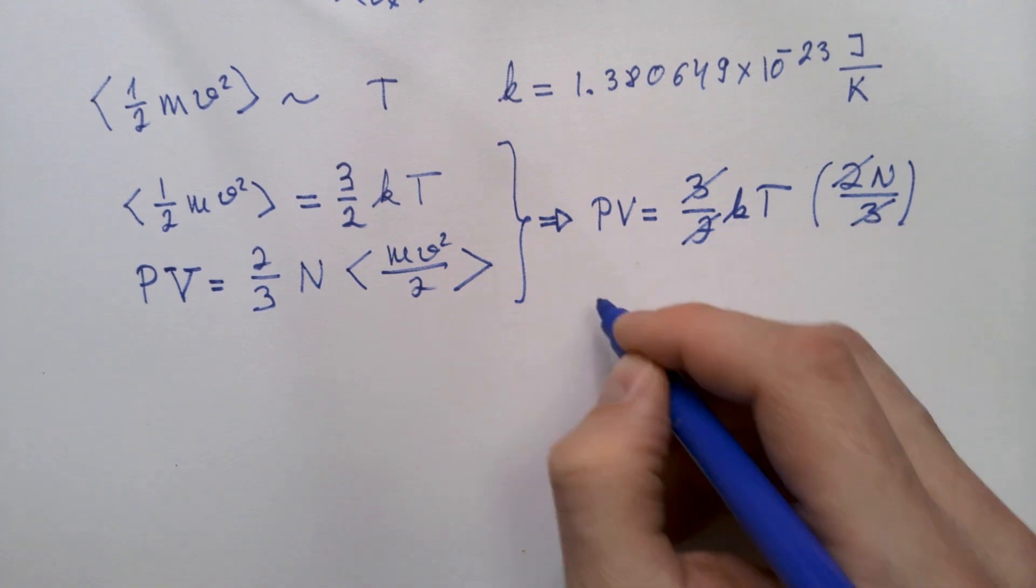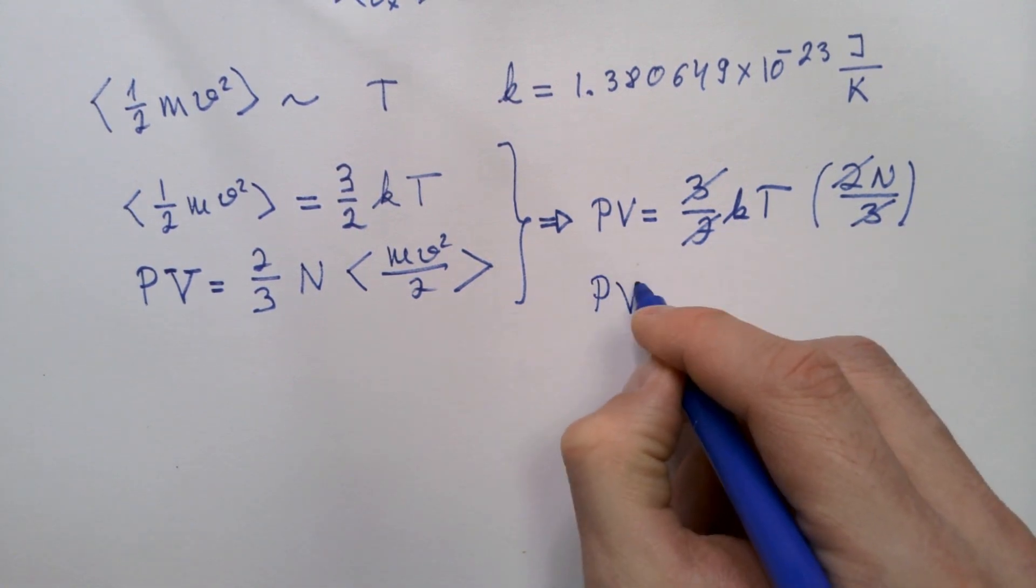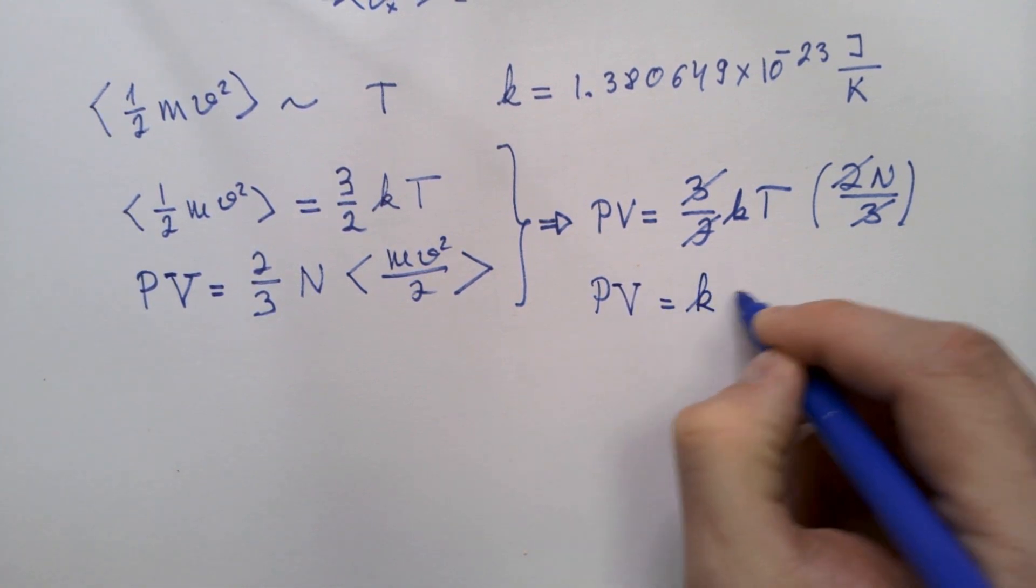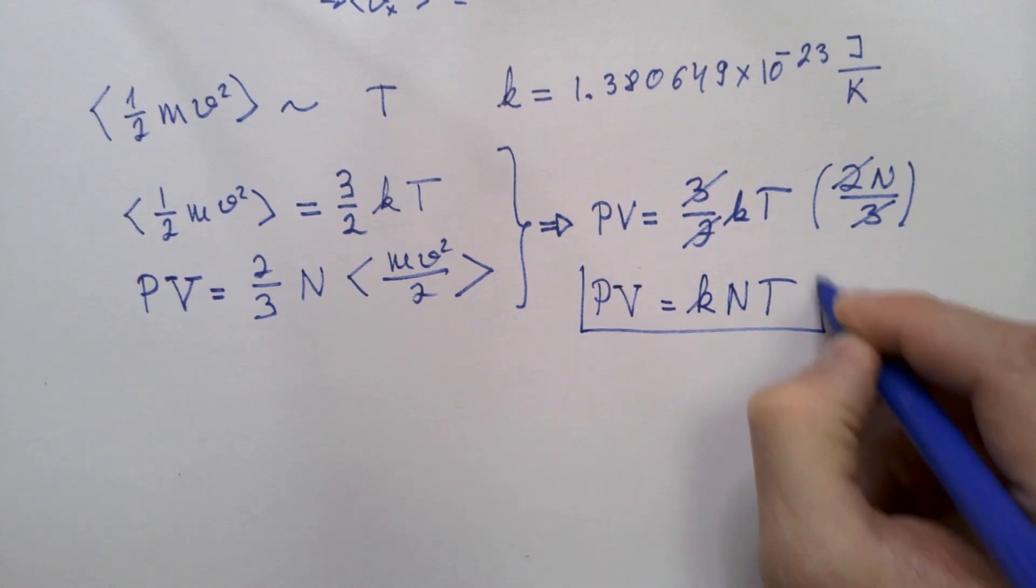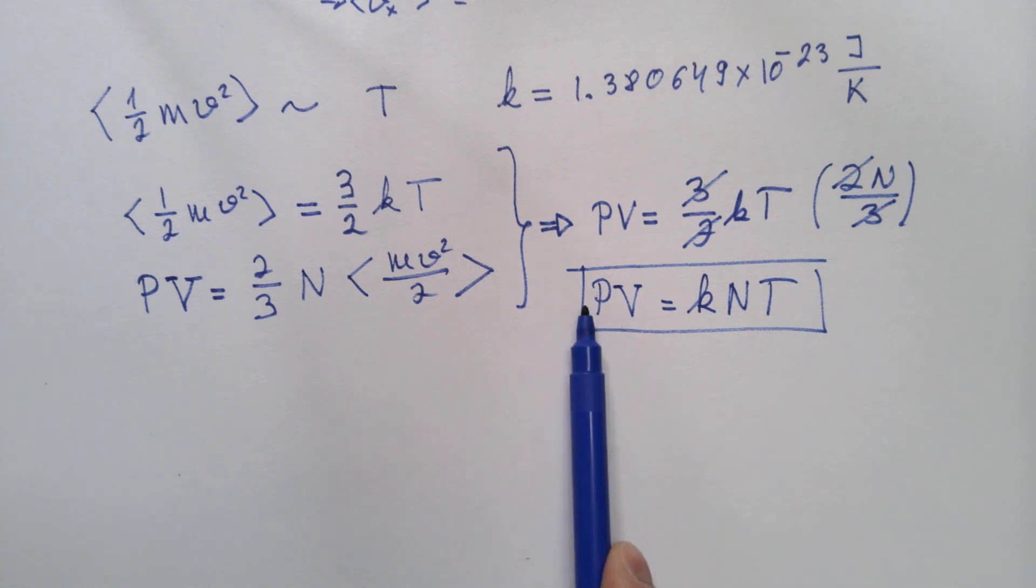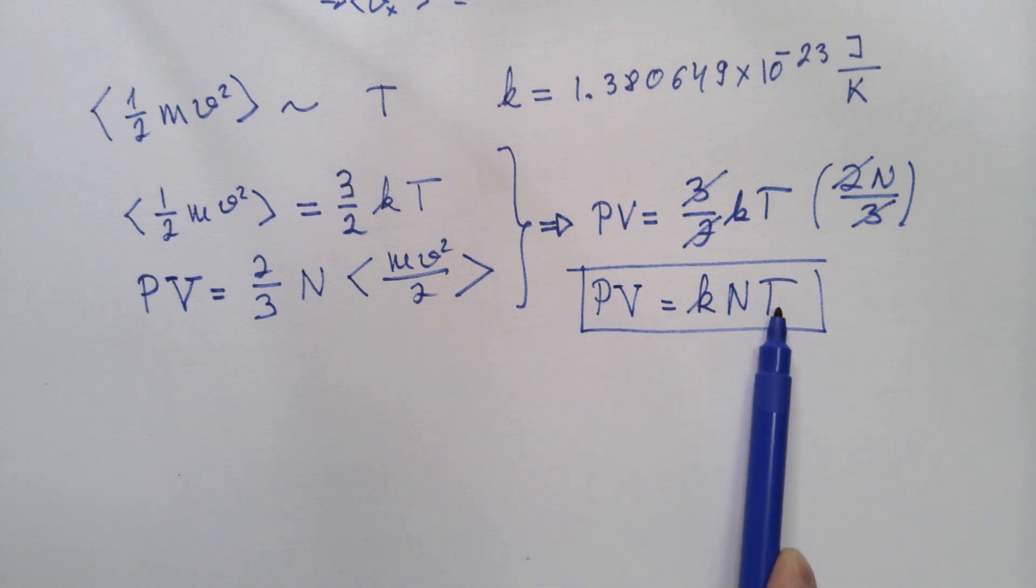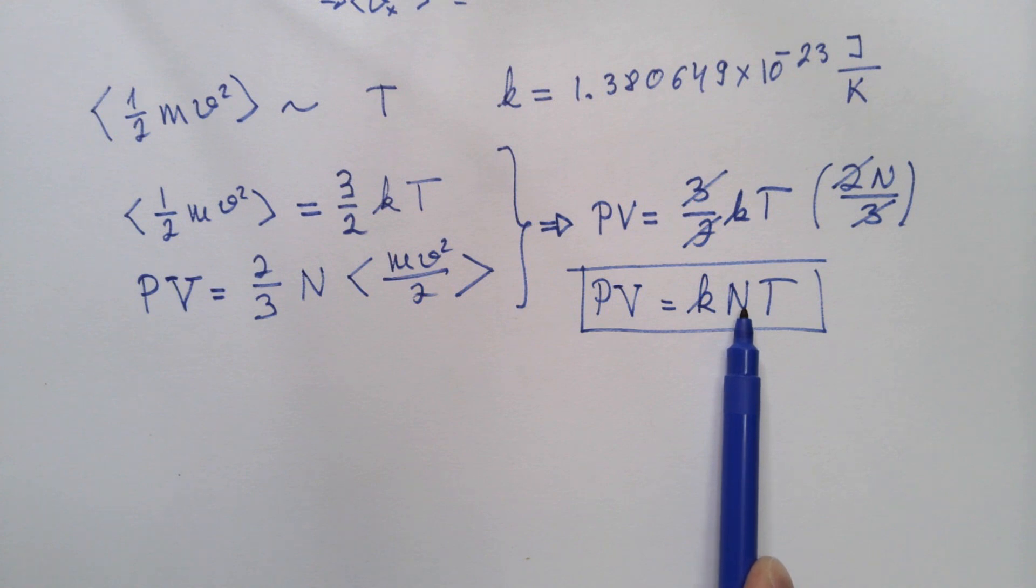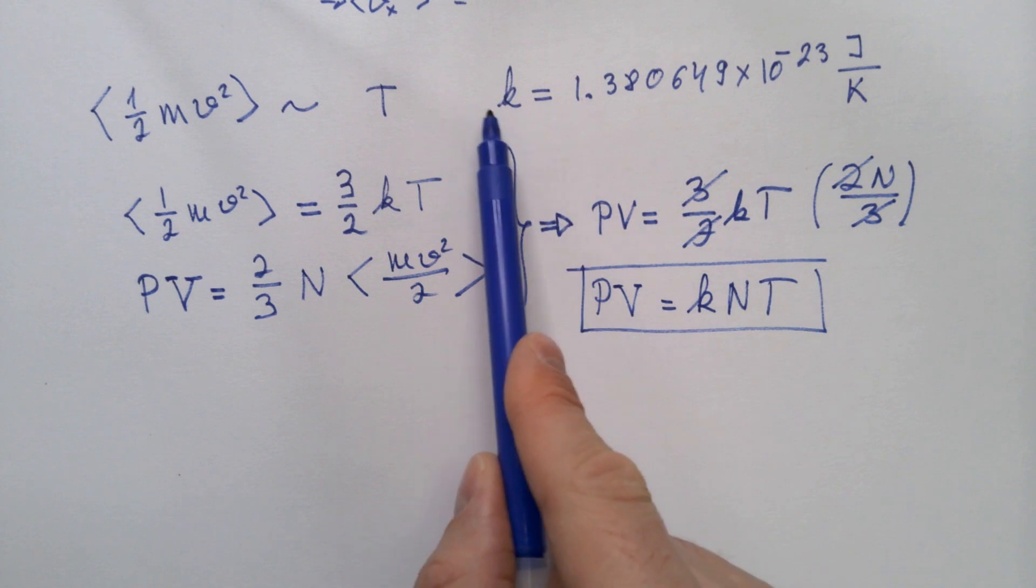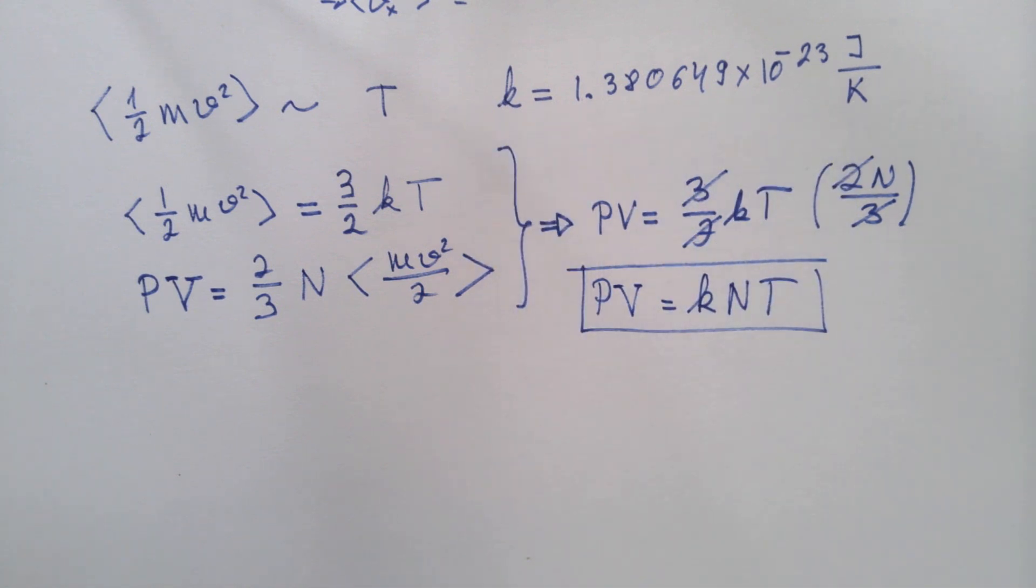And this equation becomes P times V is equal NkT. And this is the basic fundamental form of the equation of state that relates three macroscopic quantities of an ideal gas. Pressure, volume, and temperature. And they are related through number of particles in that volume V, and they are also related through this universal constant called Boltzmann constant.